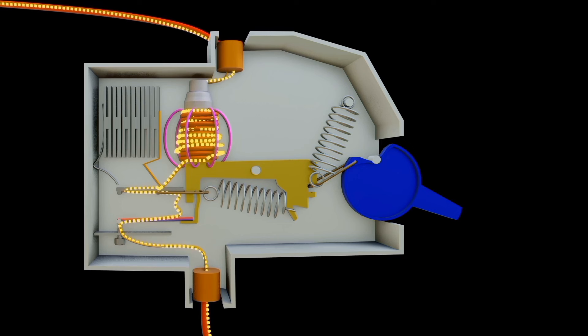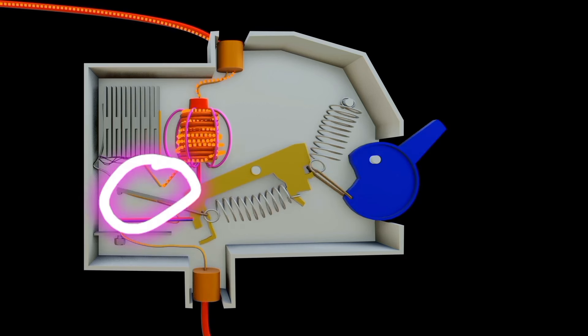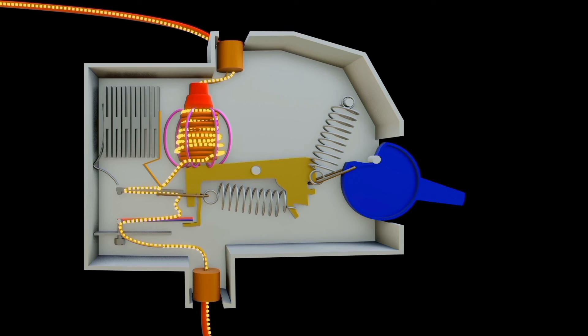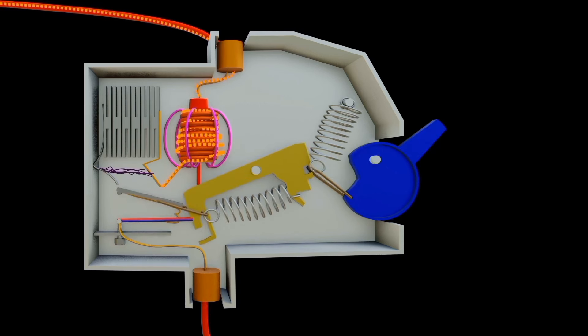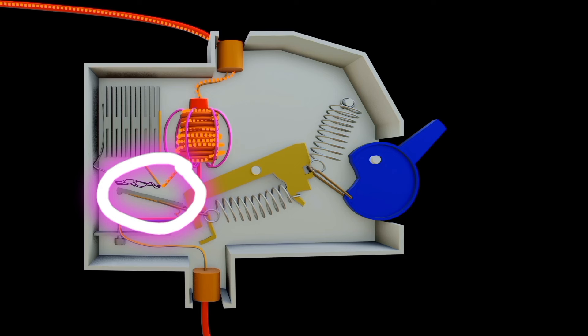But consequently large arc is formed. As the contacts open this arc is dangerous and can cause even fire. Hence an arc chamber is very useful in the design of circuit breaker. The arc chamber helps in extinguishing the arc. It provides a controlled environment where the arc is directed and cooled, allowing the circuit breaker to safely and efficiently interrupt the current flow. But how is this arc formed?